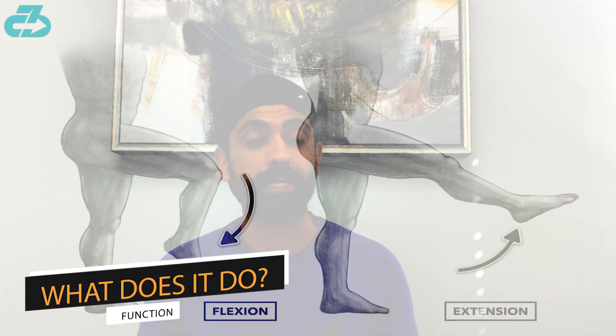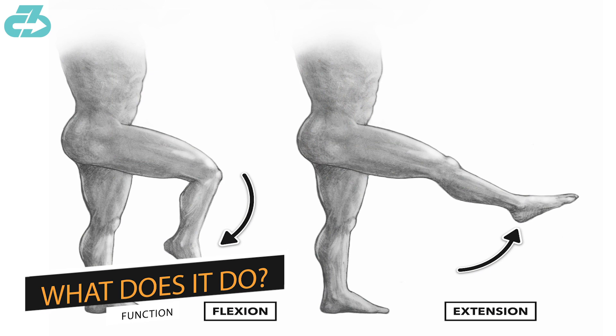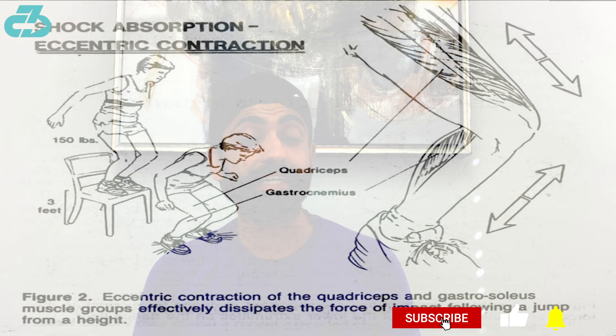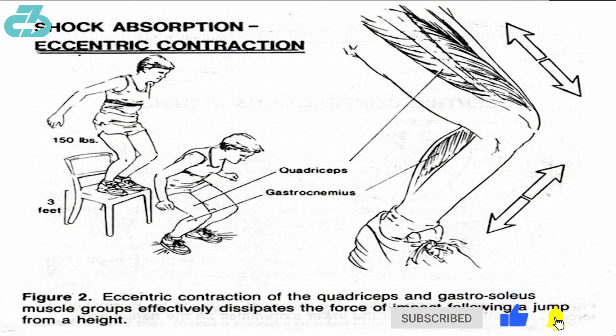It's a key part of what's called the extensor mechanism, which helps straighten the knee along with the patella tendon and the kneecap. It also takes a lot of eccentric stress because it helps control bending of the knee — aka knee flexion. For example, when you land, that quad tendon comes under significant stress, and it also has elastic properties.